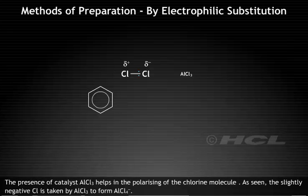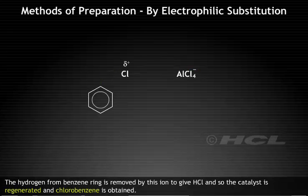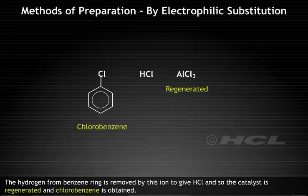The presence of catalyst AlCl3 helps in polarizing the chlorine molecule. As seen, the slightly negative Cl is taken by AlCl3 to form AlCl4-. The hydrogen from benzene ring is removed by this ion to give HCl and so the catalyst is regenerated and chlorobenzene is obtained.